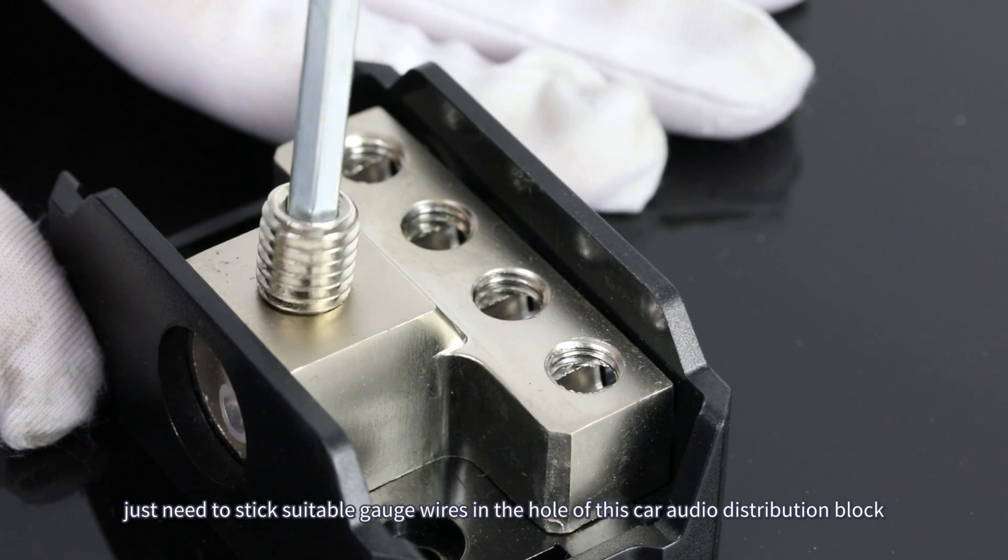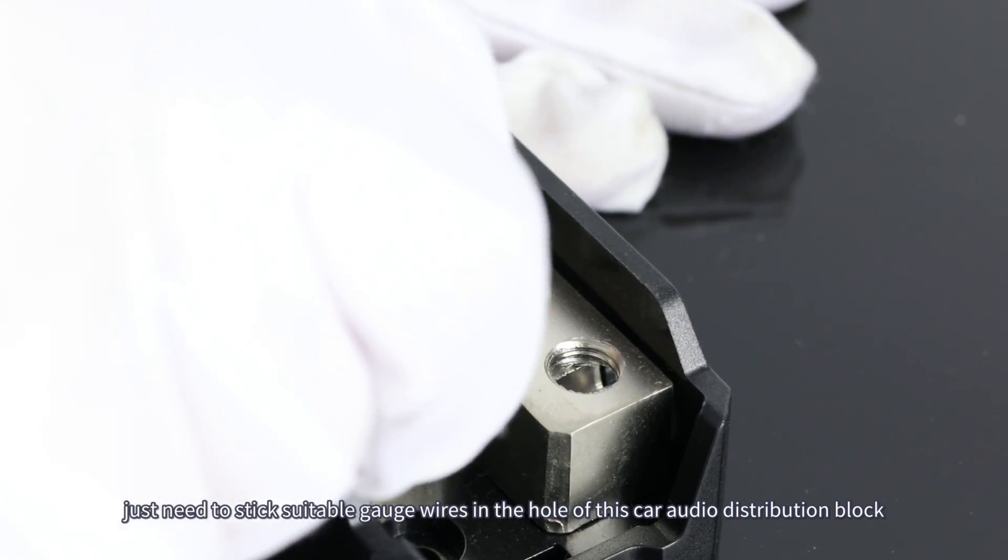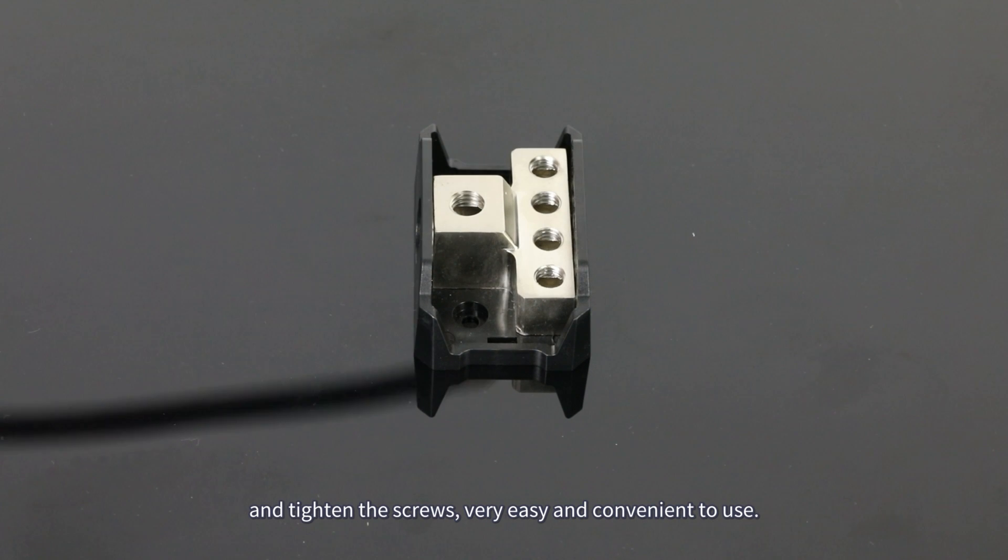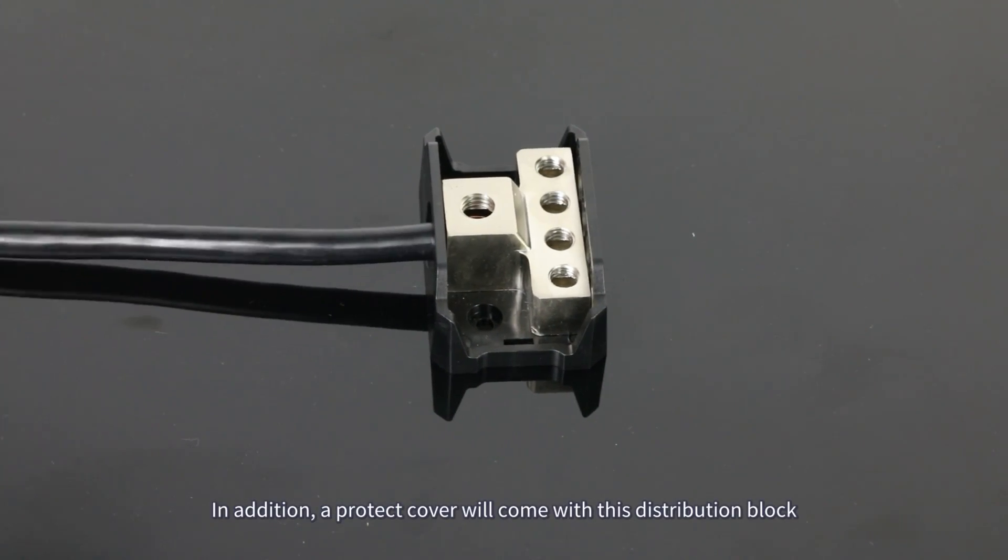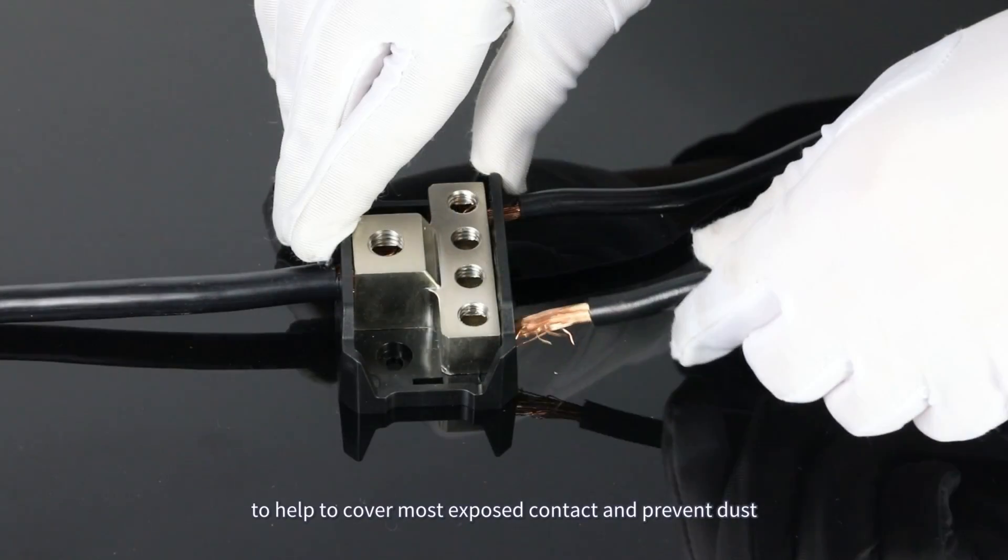Simply insert the wires into this car audio distribution block and tighten the screws, very easy and convenient to use. In addition, a protective cover will come with this distribution block to help cover most exposed contacts.